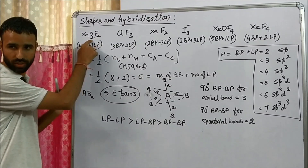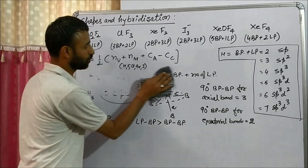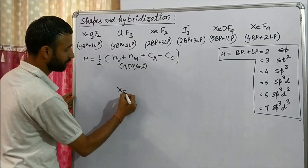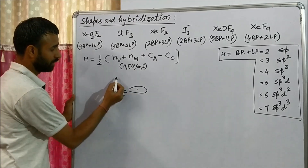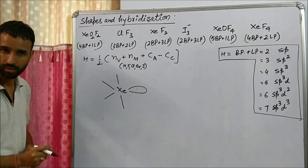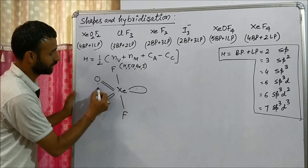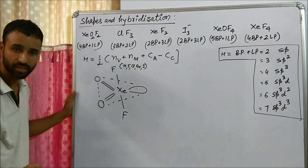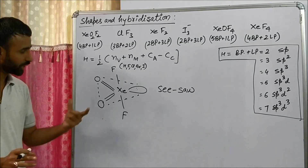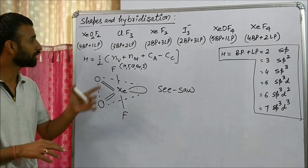Drawing the shape of XeO2F2: xenon is the central atom with one lone pair. The double bonds are at equatorial positions and the single bonds occupy the remaining positions. This type of shape is known as seesaw. The arrangement is trigonal bipyramidal, but the shape is seesaw. So whenever we have 4 bond pairs and 1 lone pair, the shape is seesaw.